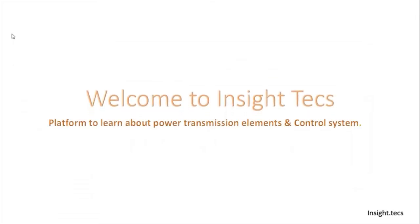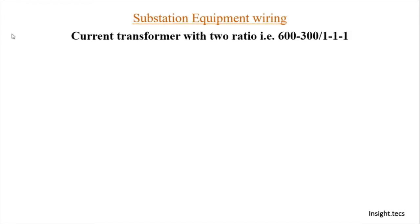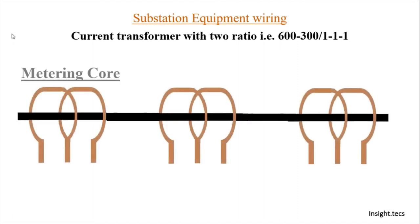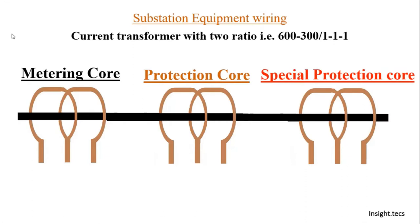Hello friends, welcome to Inside Text, the platform to learn about power transmission elements and its control systems. In the previous video we have seen about the current transformer and various types of CTs — dead tank and live tank CT — and also we have seen its electrical diagram and how the primary and secondary cores are there in the CT. In today's video we are going to see in some more detail about how the cores are arranged in the CT.